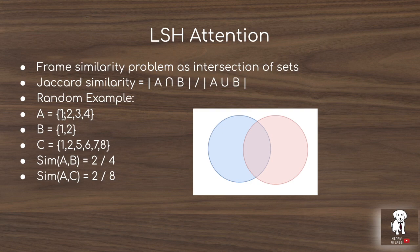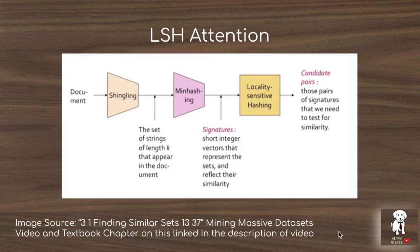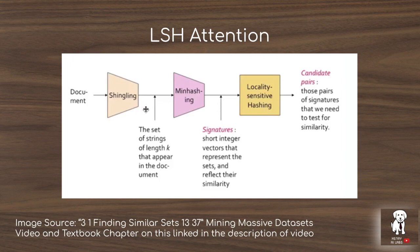Jaccard similarity is computed as the intersection divided by the union. For example, if set A is {1,2,3,4} and set B is {1,2}, the Jaccard similarity is 2/4. If set C has 2 elements in common with A and a union of 8, the similarity is 2/8. A great description of locality-sensitive hashing is found in the book 'Mining Massive Data Sets,' linked in the description. This pipeline describes a motivating example of finding plagiarism by comparing similarity between documents using shingling — like n-grams — extracting strings of length k by sliding a window across the document.